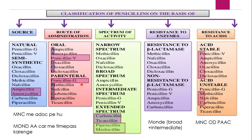Now for the third class — the spectrum of activity. Penicillin is again classified here. In this class it is narrow spectrum (smaller range), broad spectrum (comparatively large range), intermediate (in between narrow and broad), and extended spectrum of penicillins — narrow, broad, intermediate and extended. Now what is the trick to remember the spectrum of activity class of penicillins?